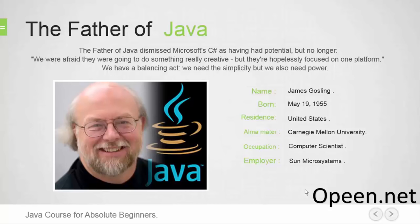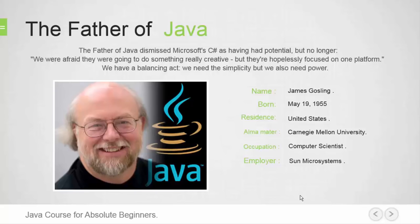In 1991, a small group of Sun engineers called the Green Team believed that the next wave in computing was the union of digital consumer devices and computers. Led by James Gosling, the team worked around the clock and created the programming language that would revolutionize our world: Java. Today, Java not only permeates the internet, but also is the invisible force behind many of the applications and devices that power our day-to-day lives, from mobile phones to handheld devices, games, navigation systems, and e-business solutions. James Gosling is known as the father of Java, because he created the original design of Java and implemented its original compiler and virtual machine.